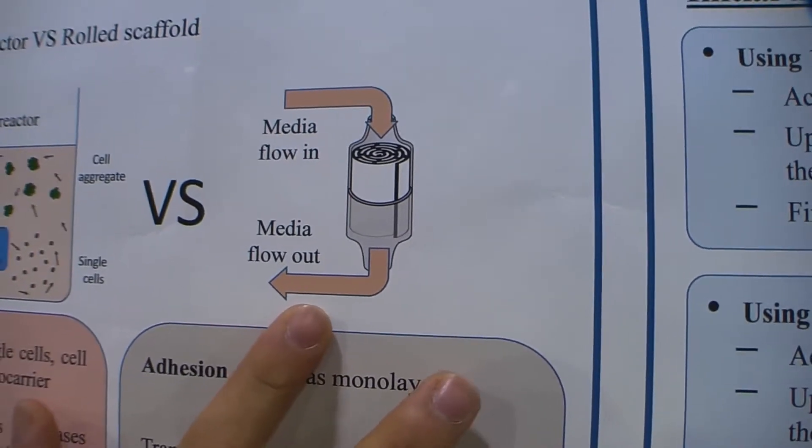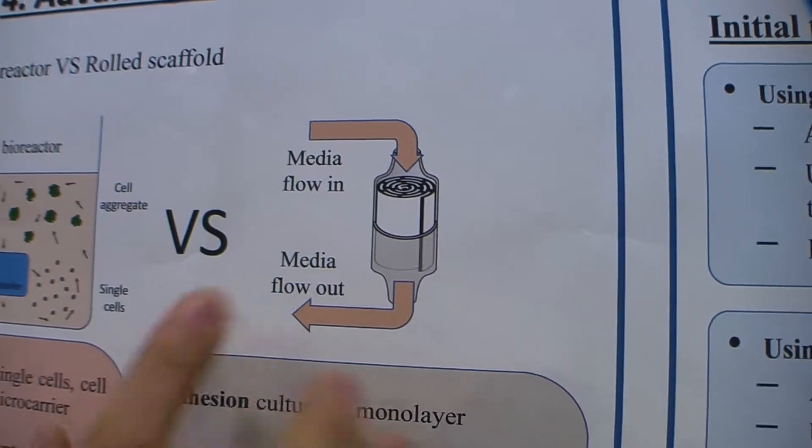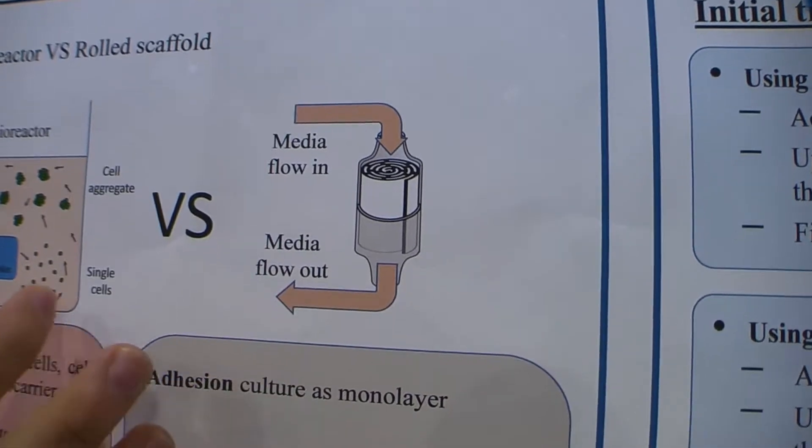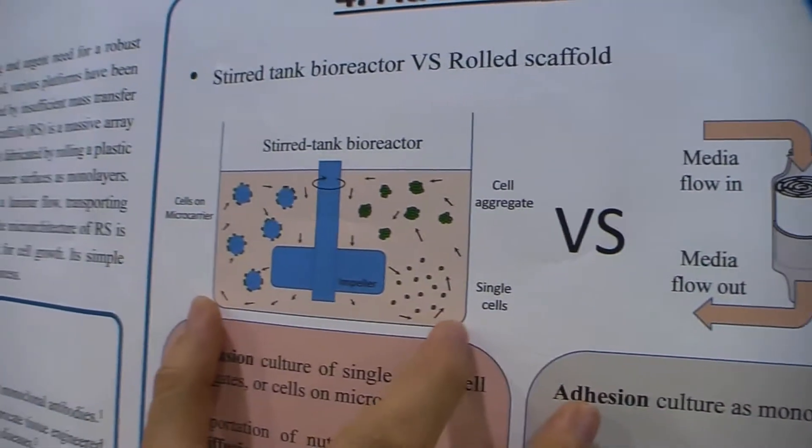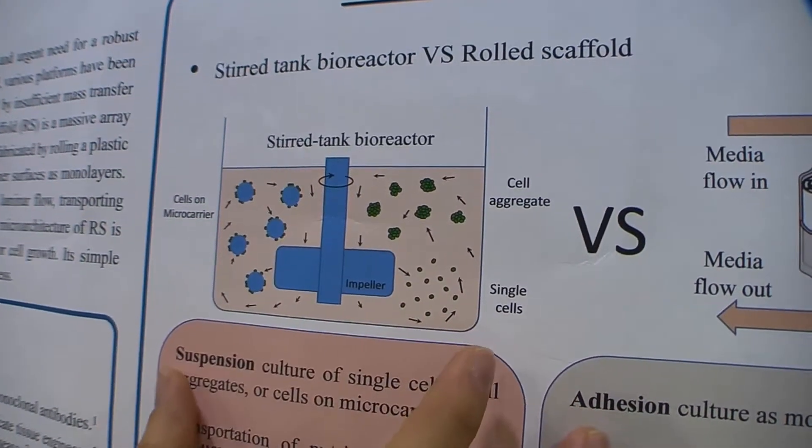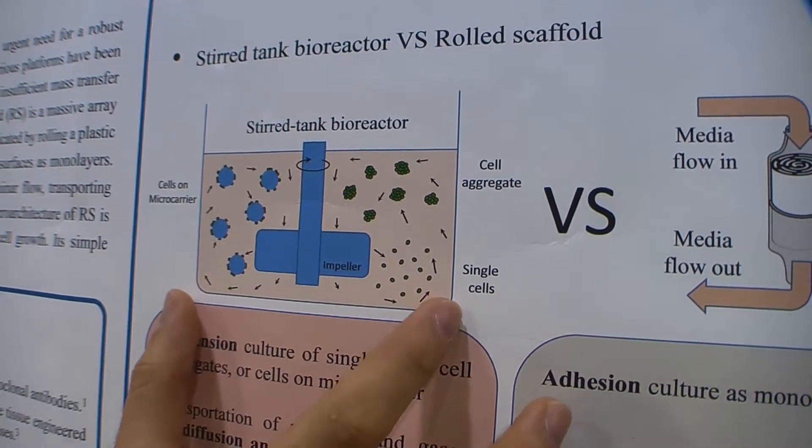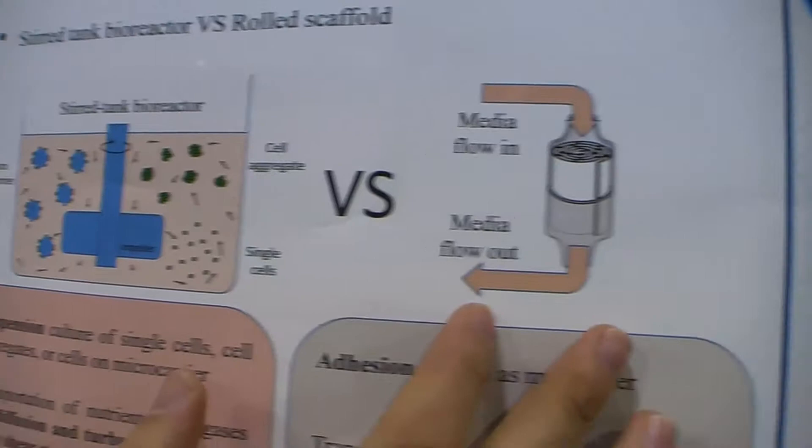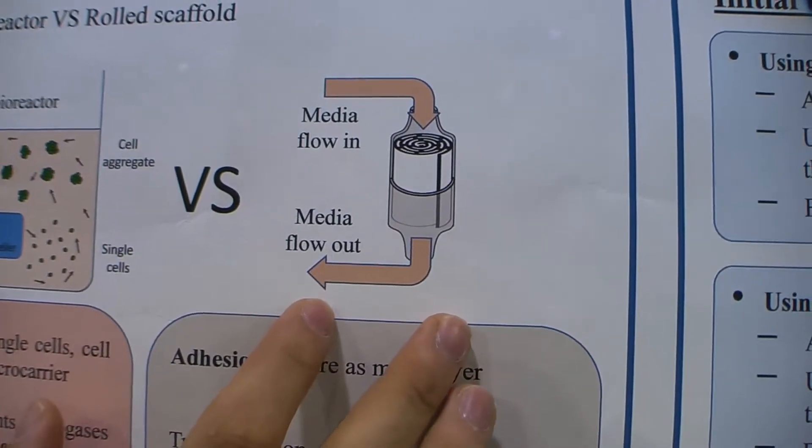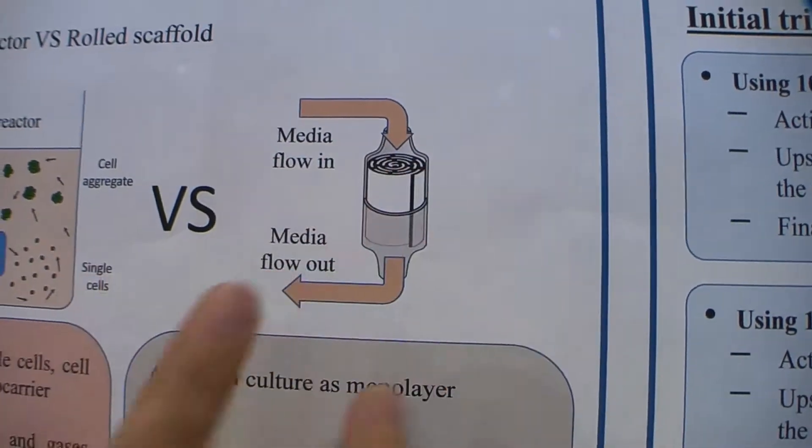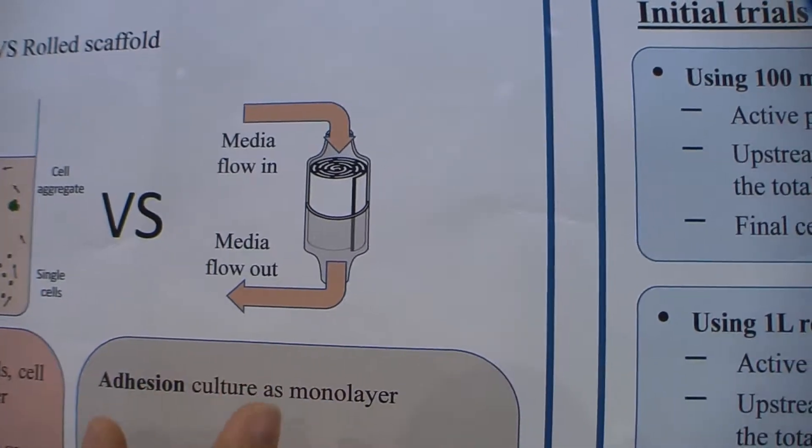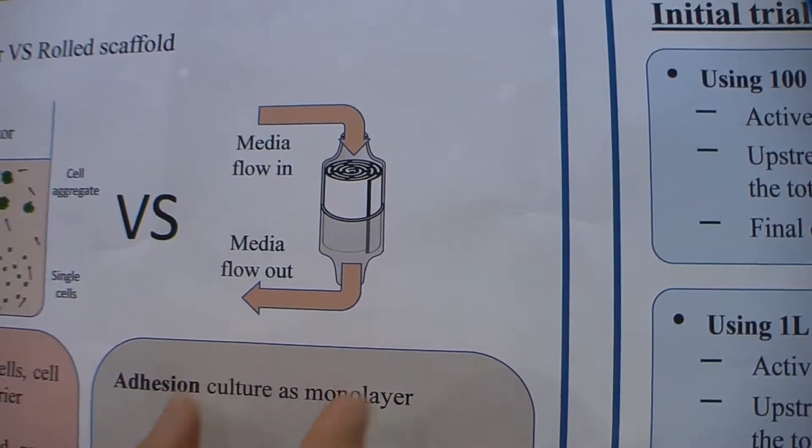Another big advantage of our technique is that when you scale up conventional bioreactors, they become bigger and you need more revolutions per minute, which puts cells under more shear stress. But in our case, when you want to scale up, we just wrap more sheets around it. So the microenvironment of the cells is independent of the scale.